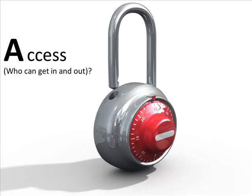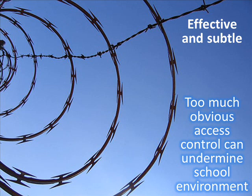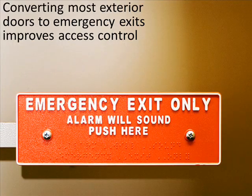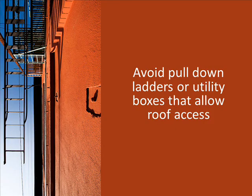Access — who can get in and out? Access control should be effective but also subtle. Too much obvious access control could undermine the school environment. Attractive window grates or separated small windows prevent access without the look and feel of heavy-handed military or prison-type control. Converting most exterior doors to emergency exits improves access control by limiting where people can enter and exit. Avoiding pull-down ladders or utility boxes that allow roof access can also help limit access.